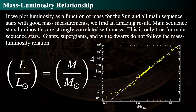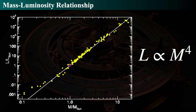If we plot luminosity as a function of mass, we find that main sequence stars' luminosities are strongly correlated with mass. Roughly, a star's luminosity compared to the sun equals the star's mass compared to the sun to the fourth power: L/L_sun ∝ (M/M_sun)^4. This relationship does not apply to giants, supergiants, or white dwarfs — they are not main sequence stars. There's a slight deviation at the low-mass end, so it's not strictly exact, but it's a good approximation.